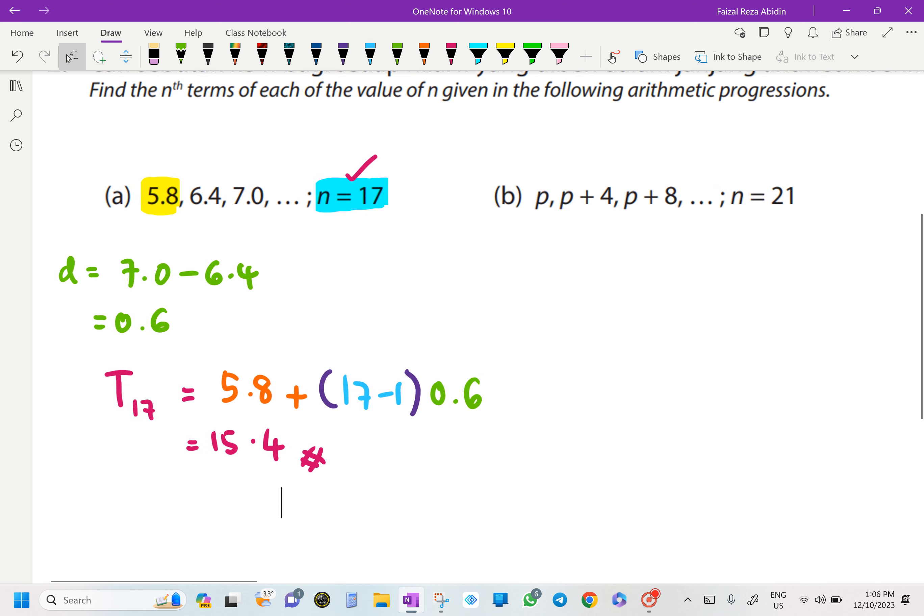Okay, for B here. So we have what? N here is 21. A here is P. We have our D. The difference here is going to be what? 4. P plus 4 minus P, you are going to get 4.